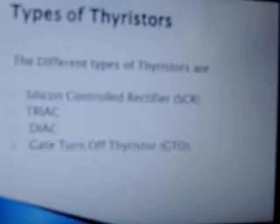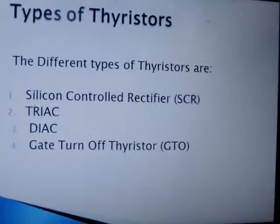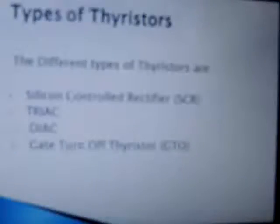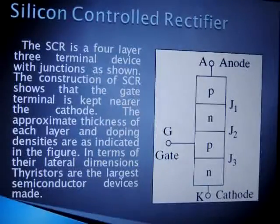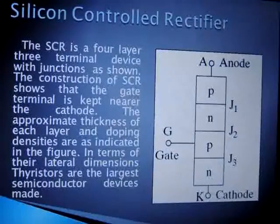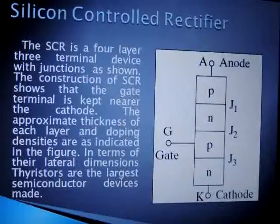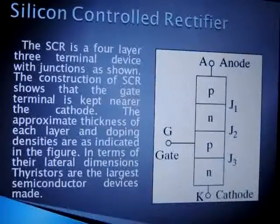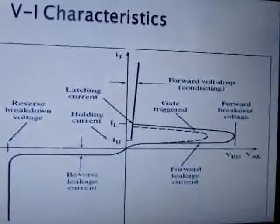Broadly, thyristors are of four types: number one, silicon controlled rectifier (SCR); number two, TRIAC, which is a bi-directional switch; number three, DIAC, also a bi-directional switch; and number four, GTO, that is gate turn-off thyristor. The SCR is also called a thyristor. As seen in its block diagram, it has three terminals — anode, cathode, and gate — and three junctions J1, J2, and J3. The gate terminal is near the P junction, not exactly at J2.